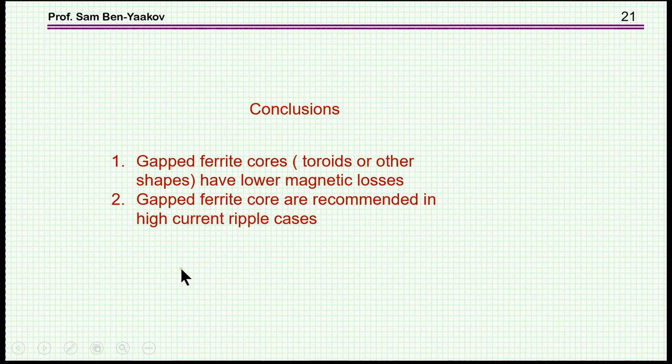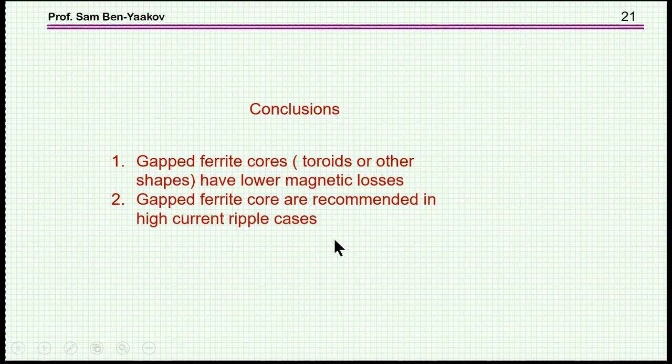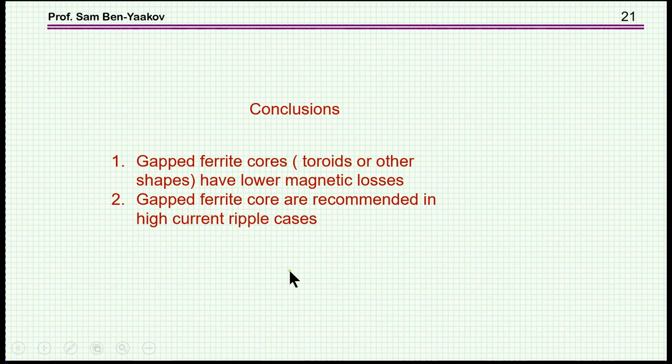The conclusions are: gapped ferrite cores — and this applies not just to toroids but to any shape such as E-core, ETD, RM — have lower magnetic losses than iron powder cores. Gapped ferrite cores are recommended for high ripple cases and especially for resonant converters. If you want to build an inductor for a resonant converter, a gapped ferrite is the way to go in terms of losses. Thank you very much for your attention; I hope you found it interesting and that it will be useful to you in the future.